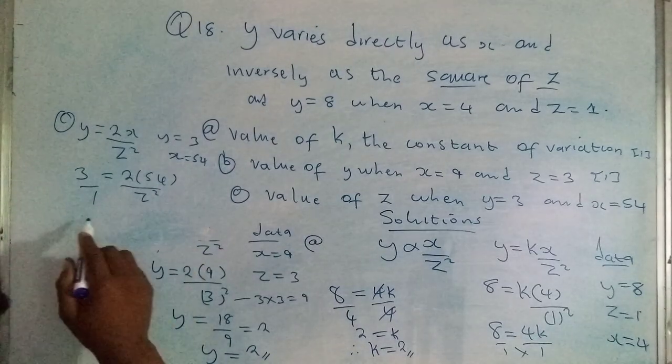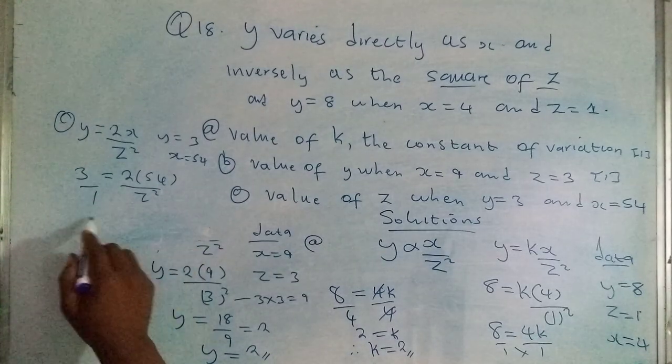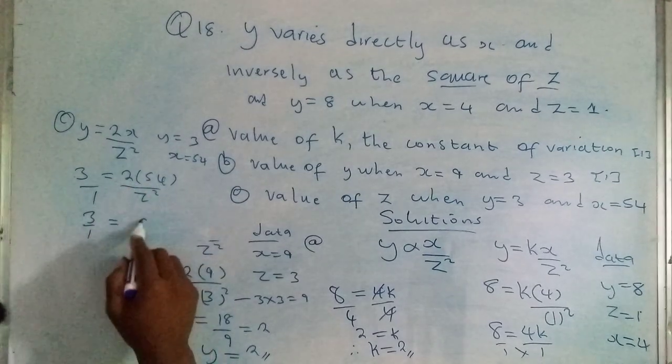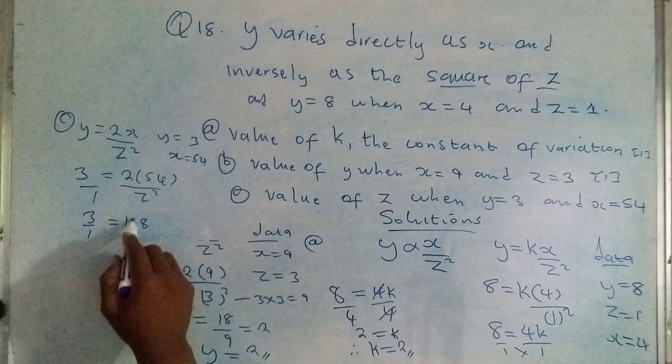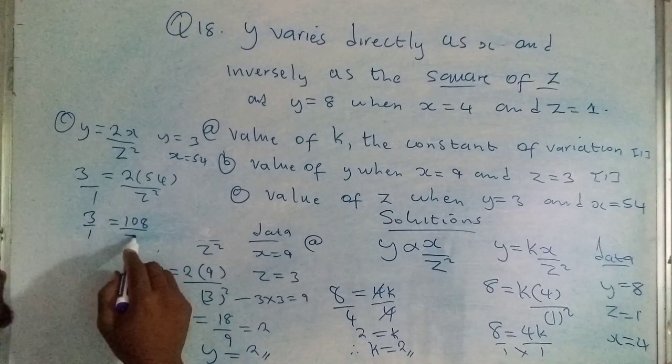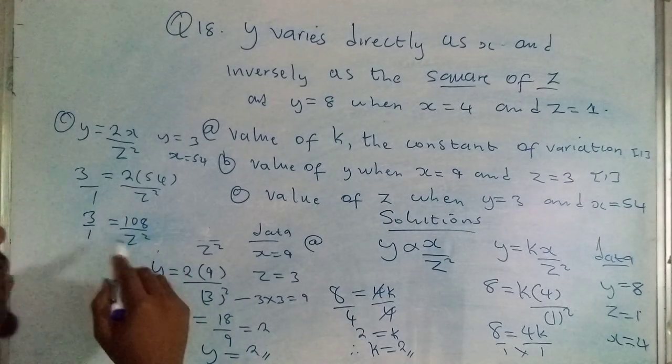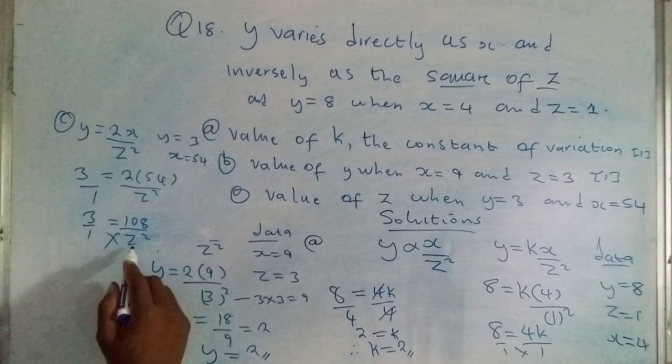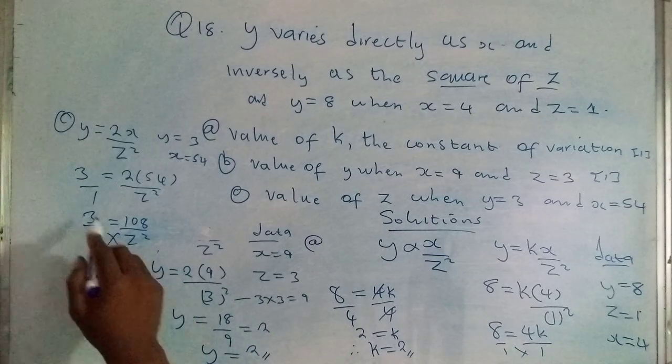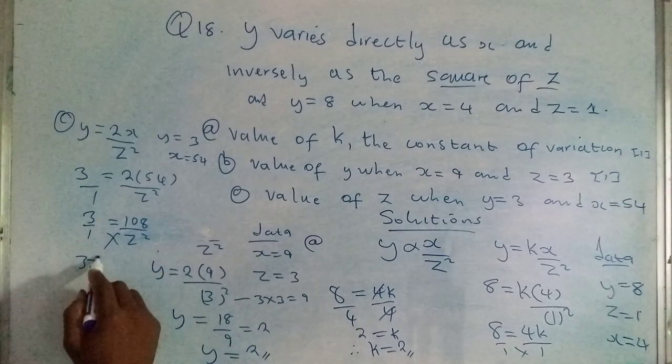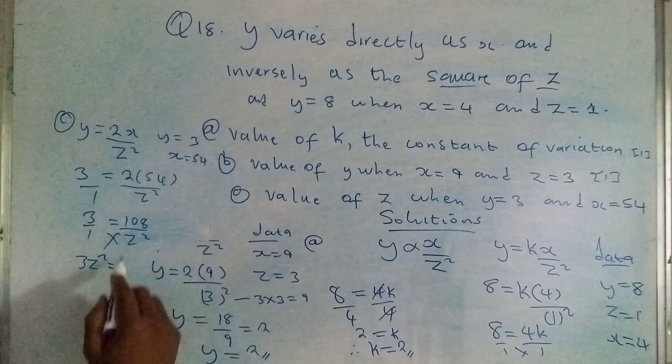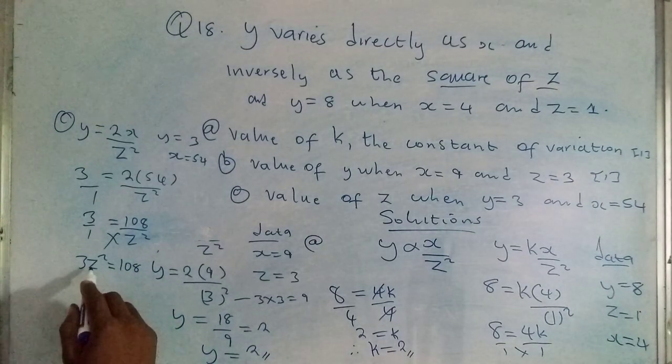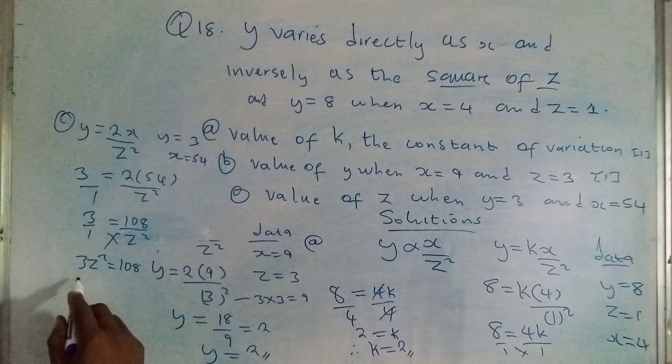What we're going to have is 3 over 1 is equal to, let me just multiply this out, 2 times 54, that's 108 over z squared. We need to get rid of the fractions to find the value of z, so we cross multiply. z squared times 3, that would be 3z squared, which is equal to 1 times 108, that's 108.